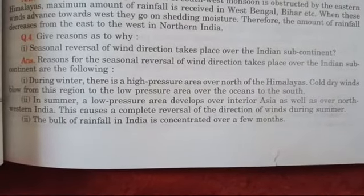Now for Question 4, which has five parts, you are given statements and you have to give reasons only. The first statement is: seasonal reversal of wind direction takes place over the Indian subcontinent. The reason is: during winter, there is a high pressure area north of the Himalayas — cold dry winds blow from this region to the low pressure area over the ocean to the south.